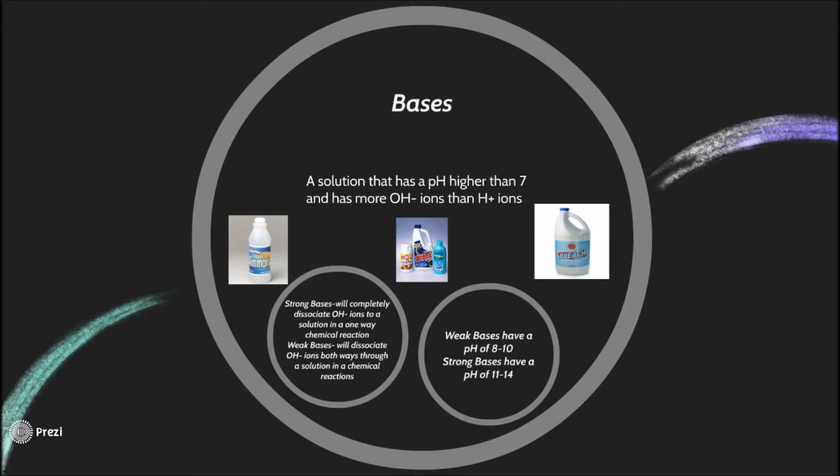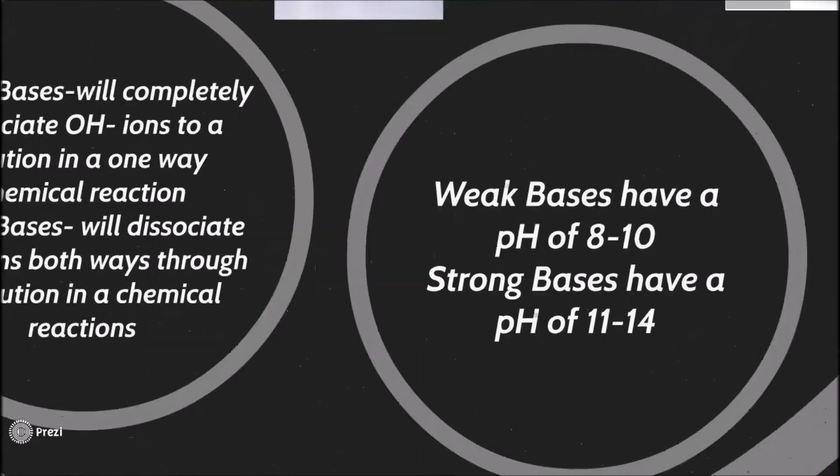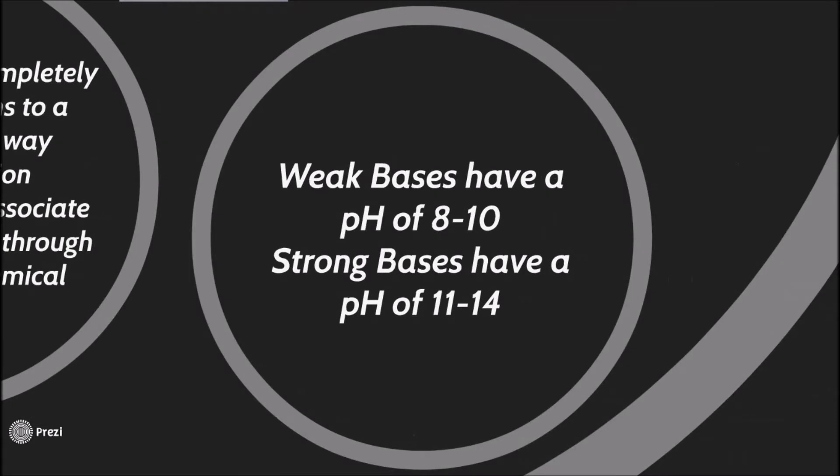Bases. A solution that has a pH higher than 7 and has more OH minus ions than H plus ions. Strong bases will completely dissociate OH negative ions to a solution in a one-way chemical reaction. Weak bases will dissociate OH negative ions both ways through a solution in a chemical reaction. This is basically the opposite of acids. Weak bases have a pH of 8 to 10. Strong bases have a pH of 11 to 14.